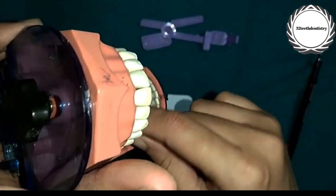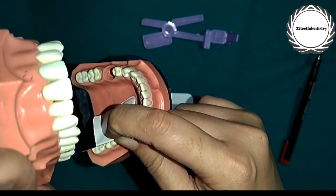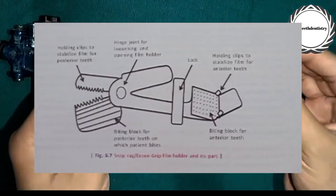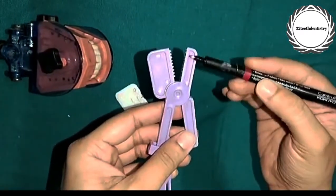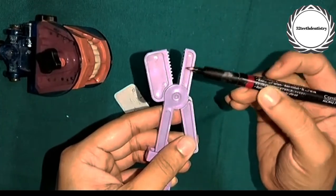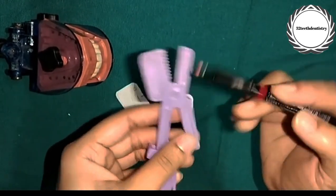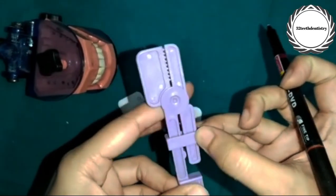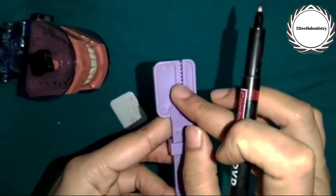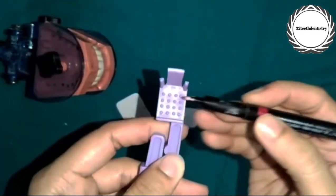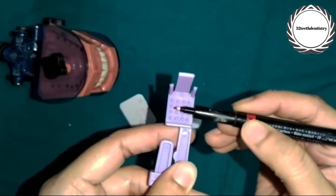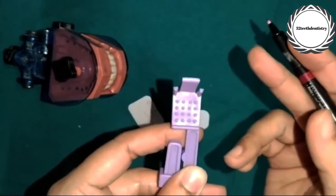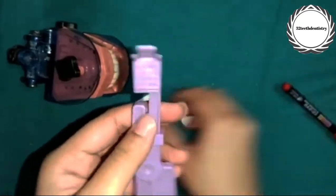Now you will see the parts. For posterior teeth, this is the hinge joint, this is the lock, this is the bite part, this is the bite block for anterior teeth, and this is the holding clip.